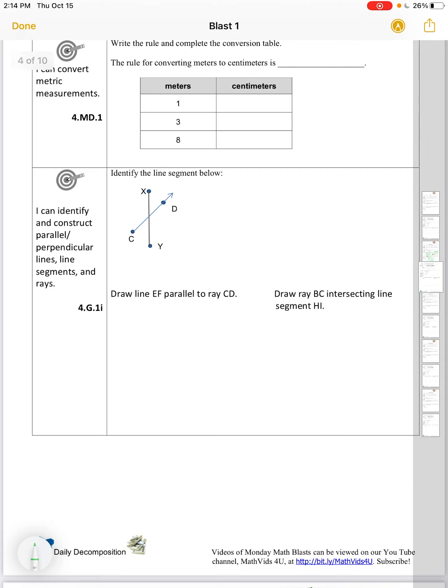So I can convert metric measurements. Write the rule and complete the conversion table. The rule for converting meters to centimeters is multiply by 100. So I'm going to say in my table, meters times 100 is equal to centimeters. So now we have the rule in the table itself. And we can use that rule to finish filling in the rest of the table.